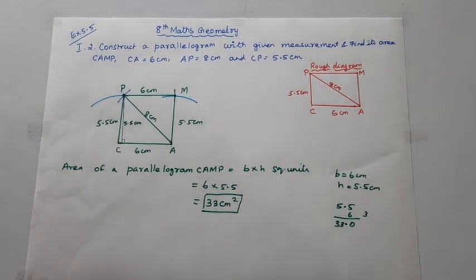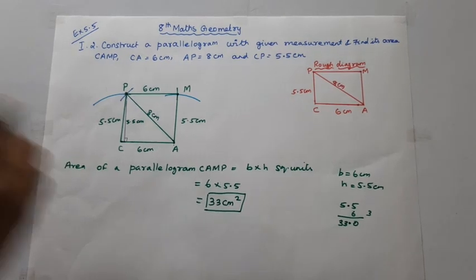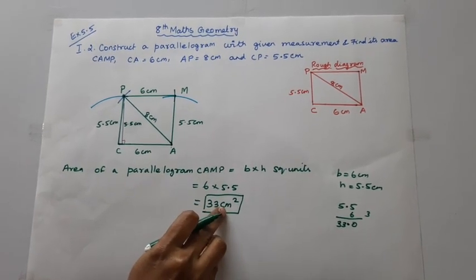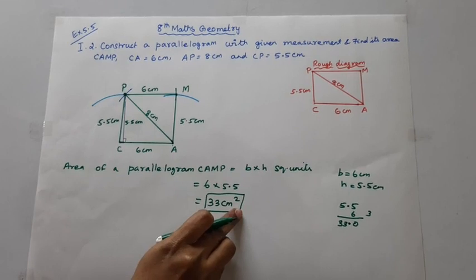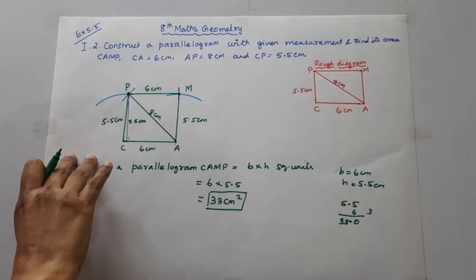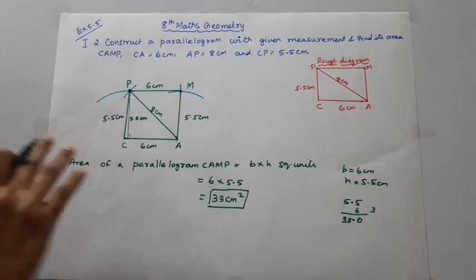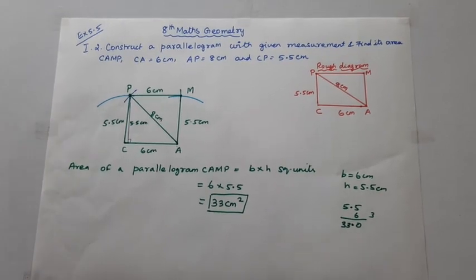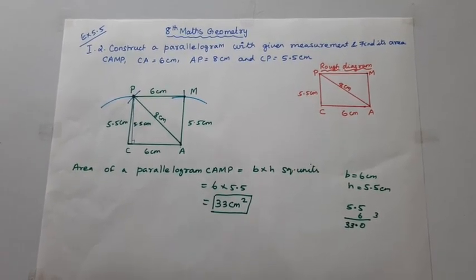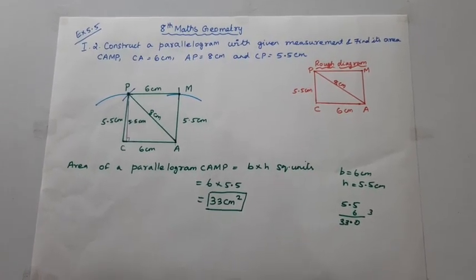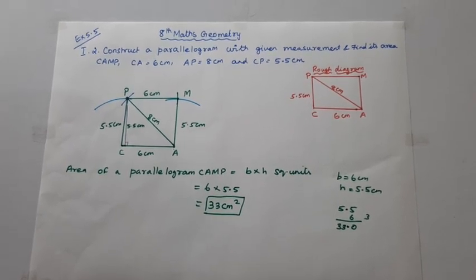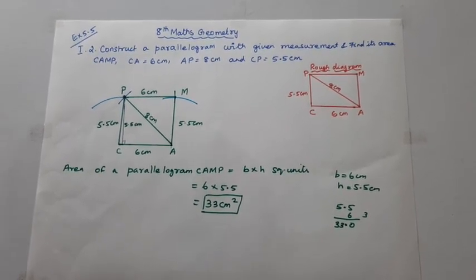The area of parallelogram CAMP is 33 cm². Draw the rough diagram, then copy the calculation and steps of construction. Practice this. This channel helps you to get 100 marks — subscribe to the videos and click the bell icon.